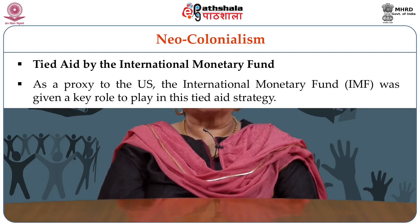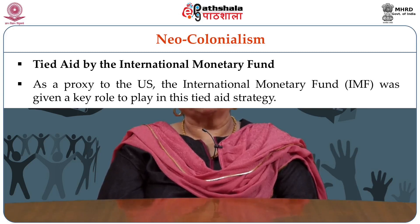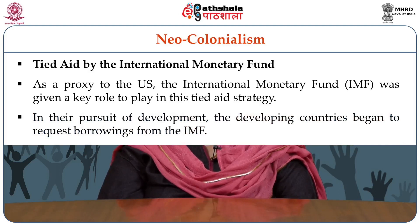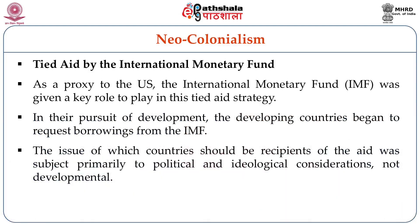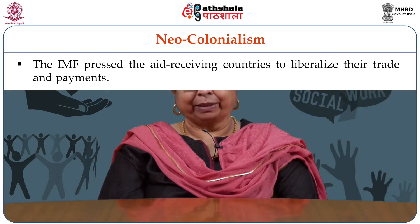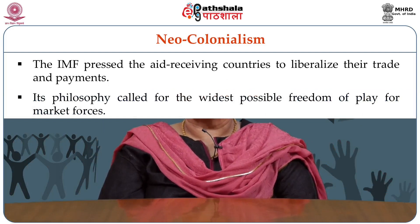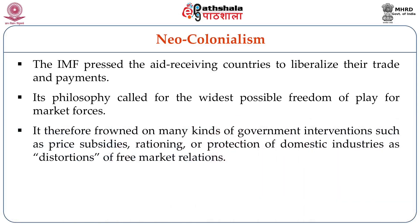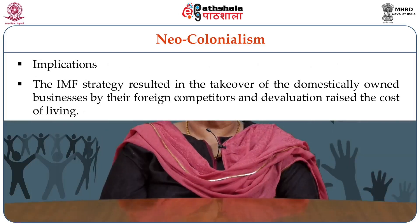The IMF was given a key role to play in this tied aid strategy. In their pursuit of development, the developing countries began to request borrowings from the IMF. The issue of which countries should be recipients of the aid was subject primarily to political and ideological considerations, not developmental. The IMF pressed the aid-receiving countries to liberalize their trade and payments. Its philosophy called for the widest possible freedom of play for market forces. It therefore frowned on many kinds of government intervention such as price subsidies, rationing, or protection of domestic industries as distortions of free market relations.